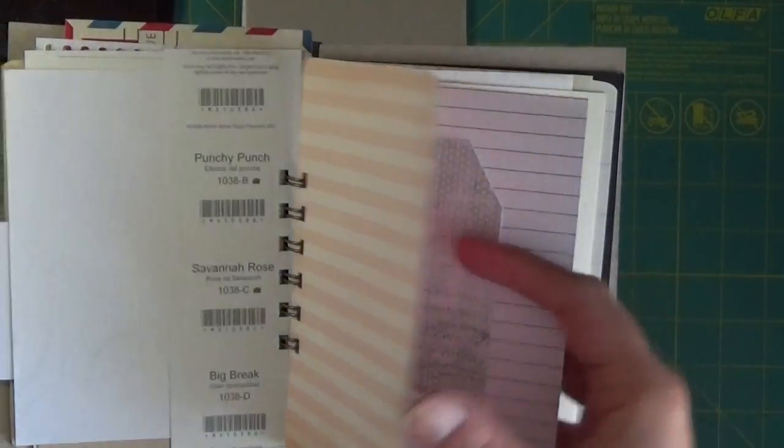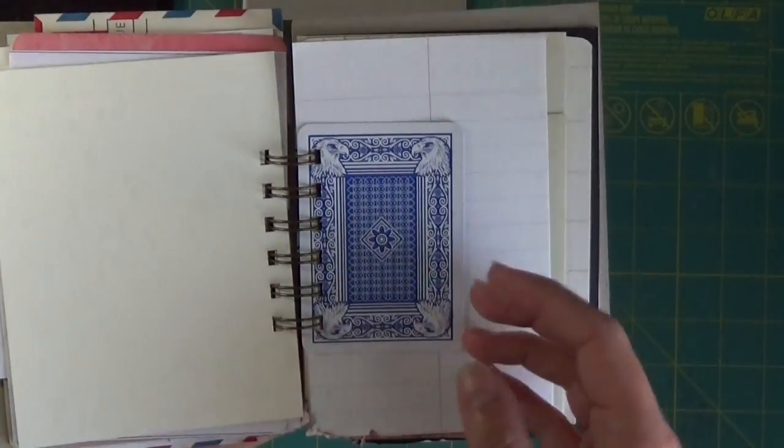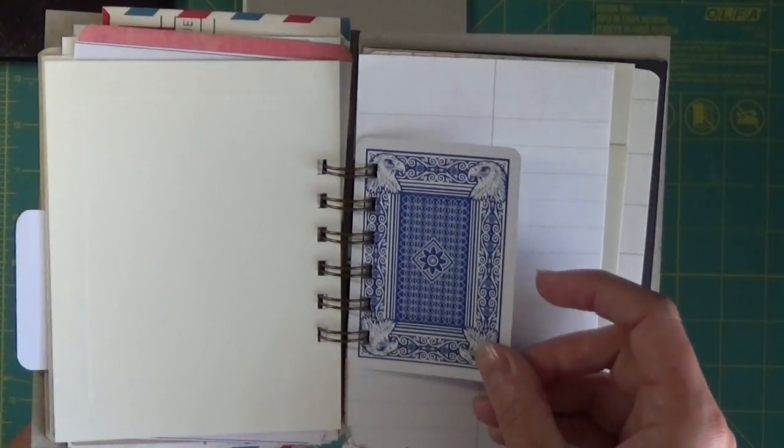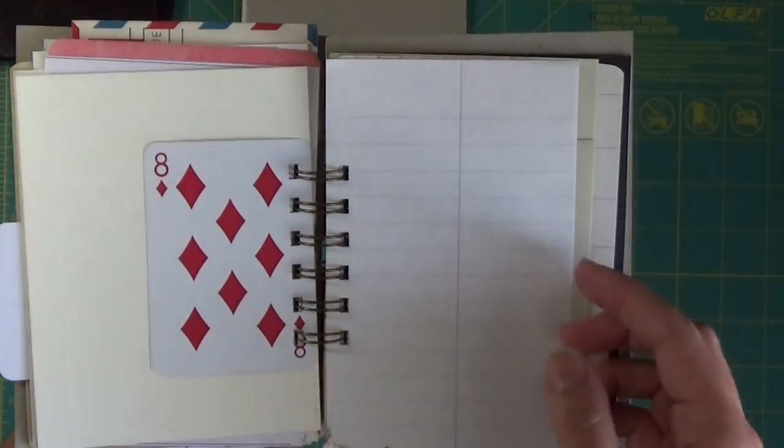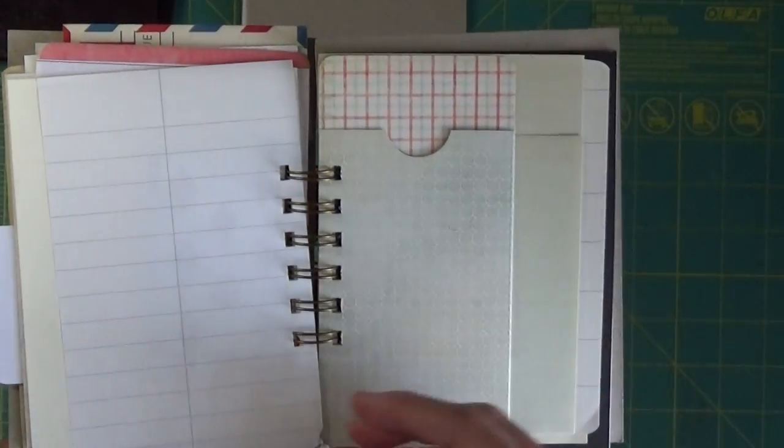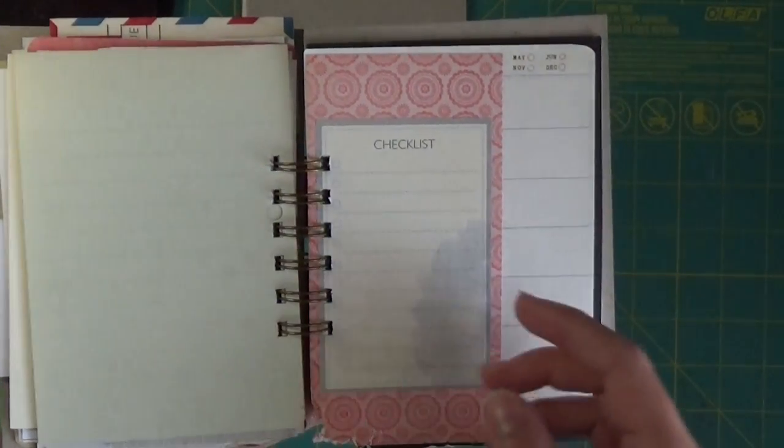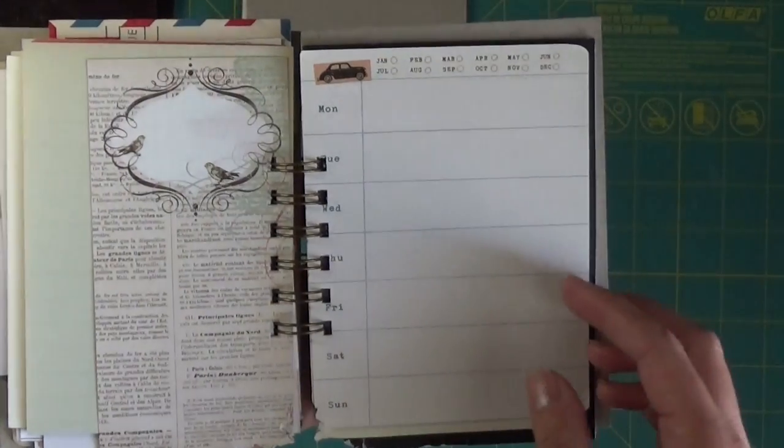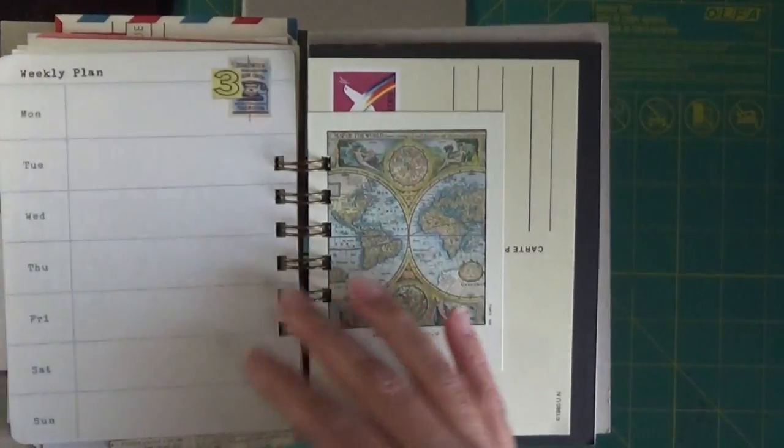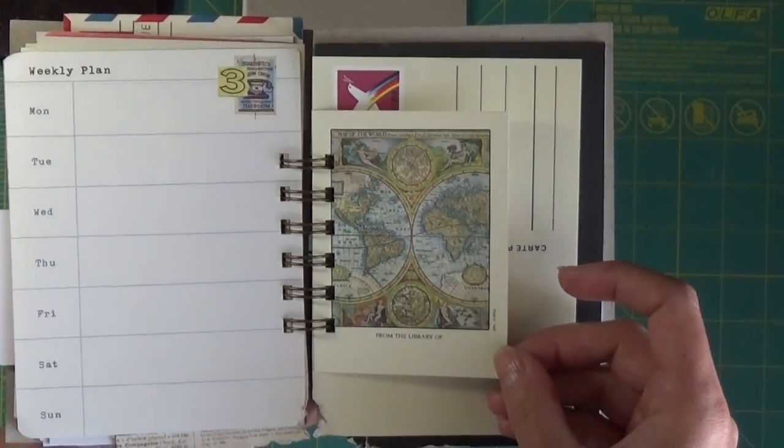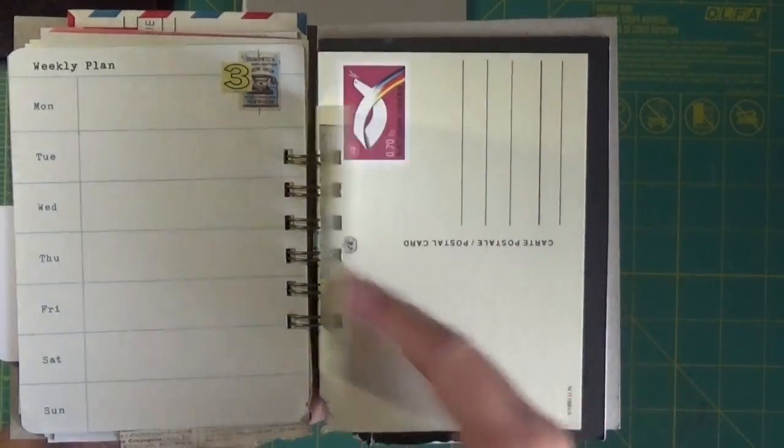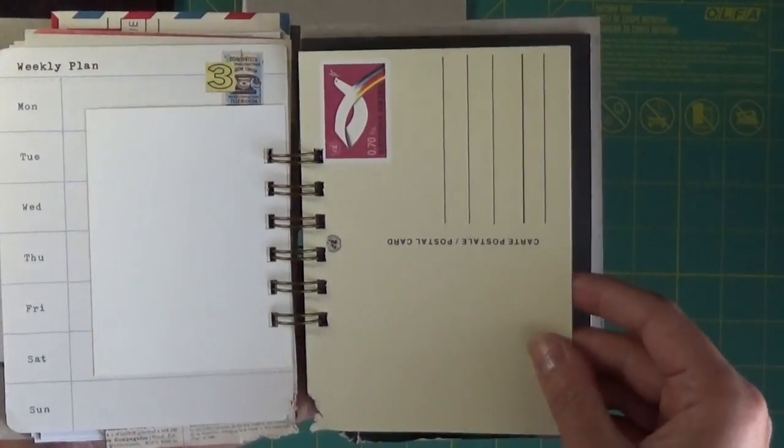So how this came to be was I started a Facebook group called Vintage Glue Books and Pages. And one of the things that we do there, besides post our collages that we do done in a vintage style, one of the things that we do are assignments based on prompts.